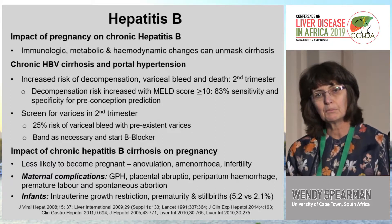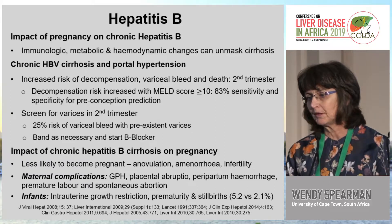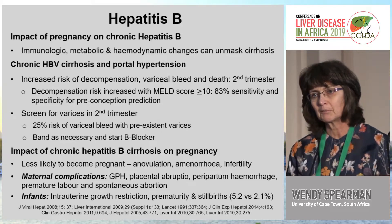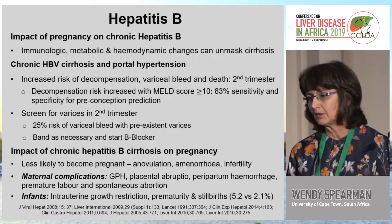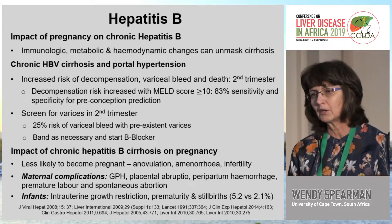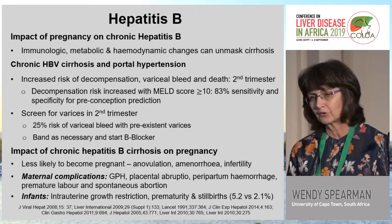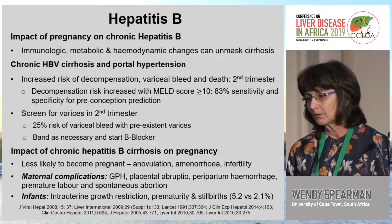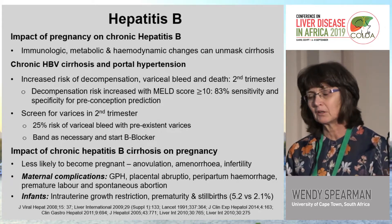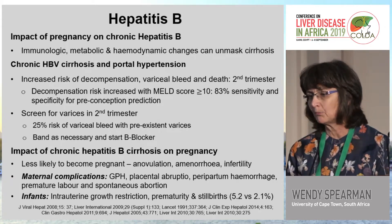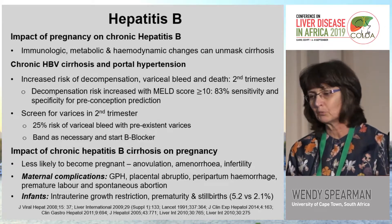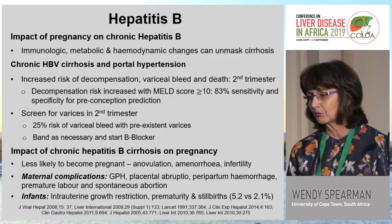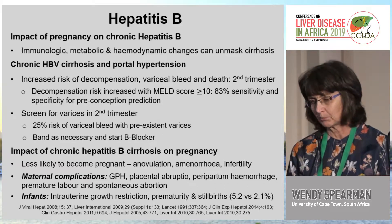In terms of the impact of chronic hepatitis B beyond pregnancy, these women are less likely to become pregnant due to anovulation, amenorrhea, and infertility. If they do become pregnant, there are increased maternal complications such as proteinuric hypertension, placental abruption, peripartum hemorrhage, premature labor, and spontaneous abortion. Infants are more likely to have intrauterine growth restriction, prematurity, and stillbirth at a rate of about 5.2%.